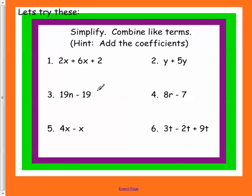Okay, you should have these copied down. The 2x goes with the 6x, so let's add them together, and we get 8x plus 2 because the 2 doesn't have anyone to combine with.